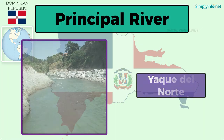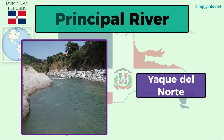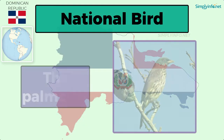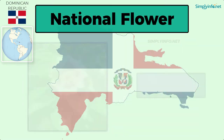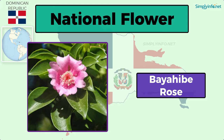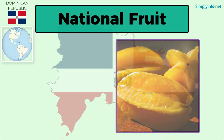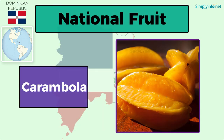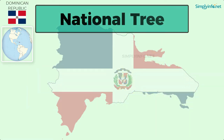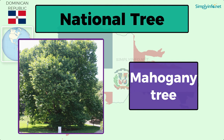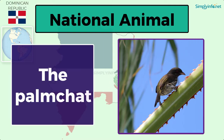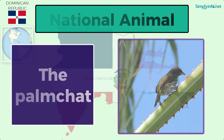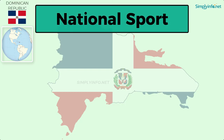Principal river: Yaque del Norte. National bird: the palm chat. National flower: bayahibe rose. National fruit: carambola, also known as star fruit. National tree: mahogany tree. National animal: the palm chat. National sport: baseball.